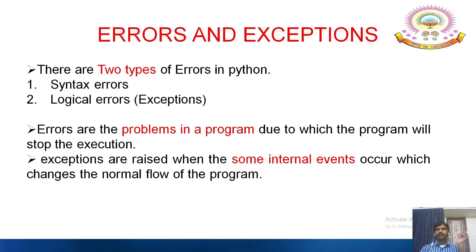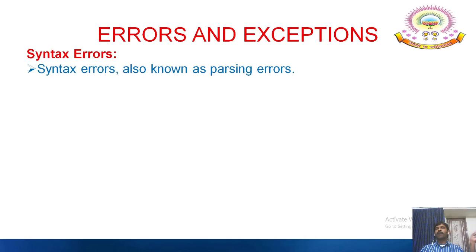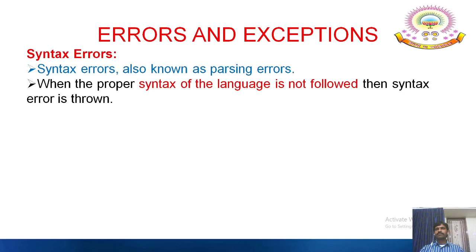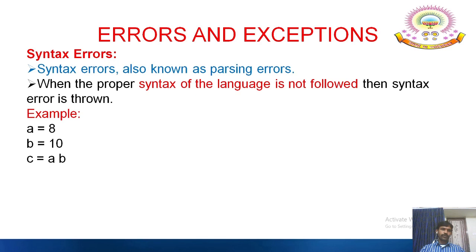An exception is an error raised when there is a predefined error committed by the user. Syntax errors are also known as parsing errors — while compiling, interpreting, or translating the program, the interpreter will find whether there are some errors or mistakes. Such errors are generated while parsing the program, which is why they are also known as parsing errors. When the proper syntax of the language is not followed, a syntax error is thrown.